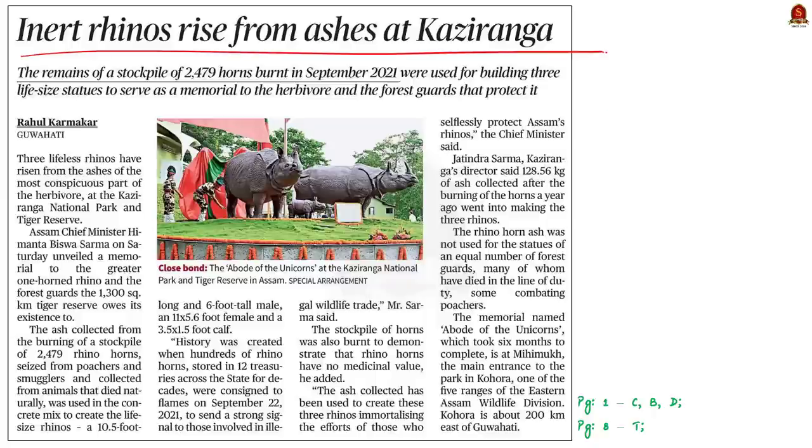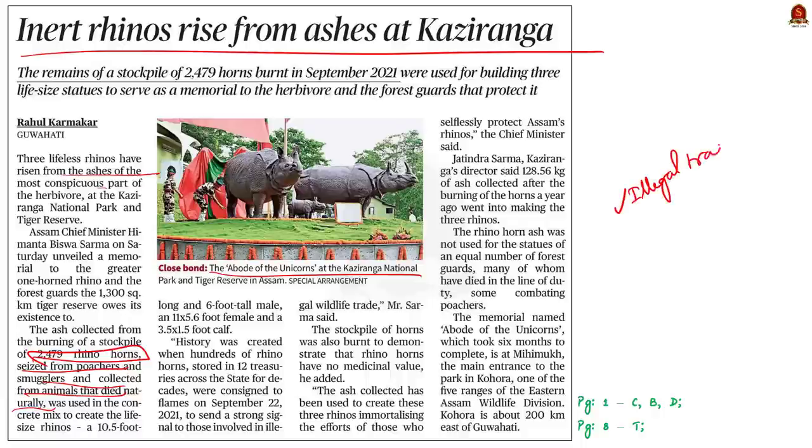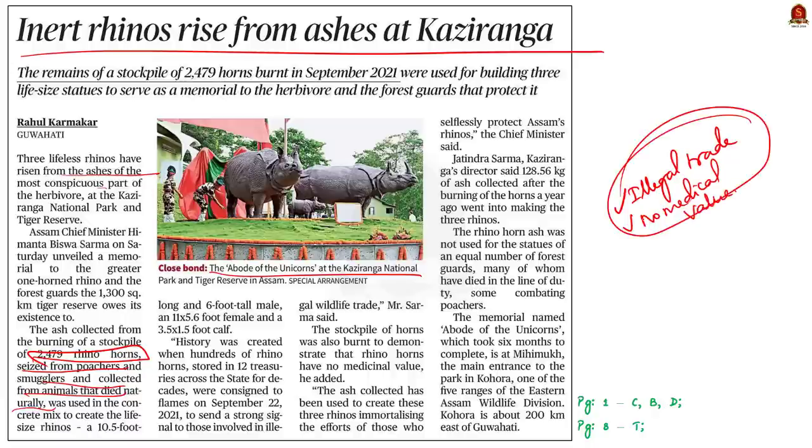See this article here. It says that the ash collected from the burning of a stockpile of 2479 rhino horns was used in the concrete mix to create the life size rhinos. See these horns were seized from poachers and smugglers and collected from animals that died naturally. And the article says that the burning of horns was done to send a message to those involved in the illegal wildlife trade and also it was done to demonstrate that rhino horns have no medical value. So this is the crux of the news article given here.